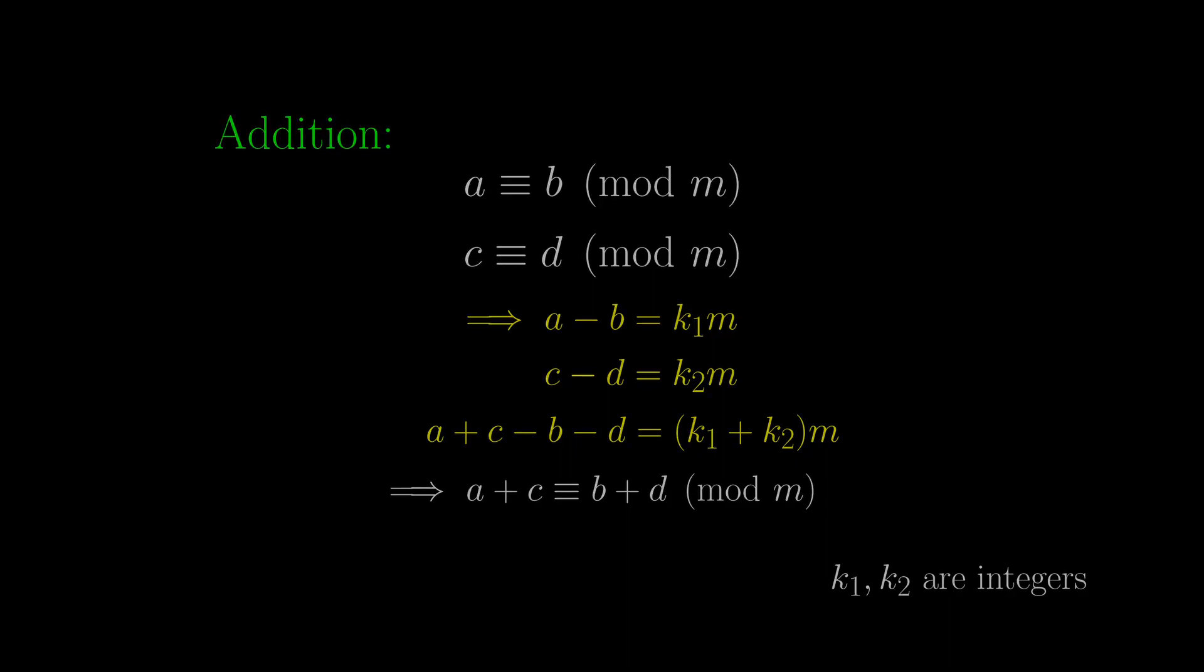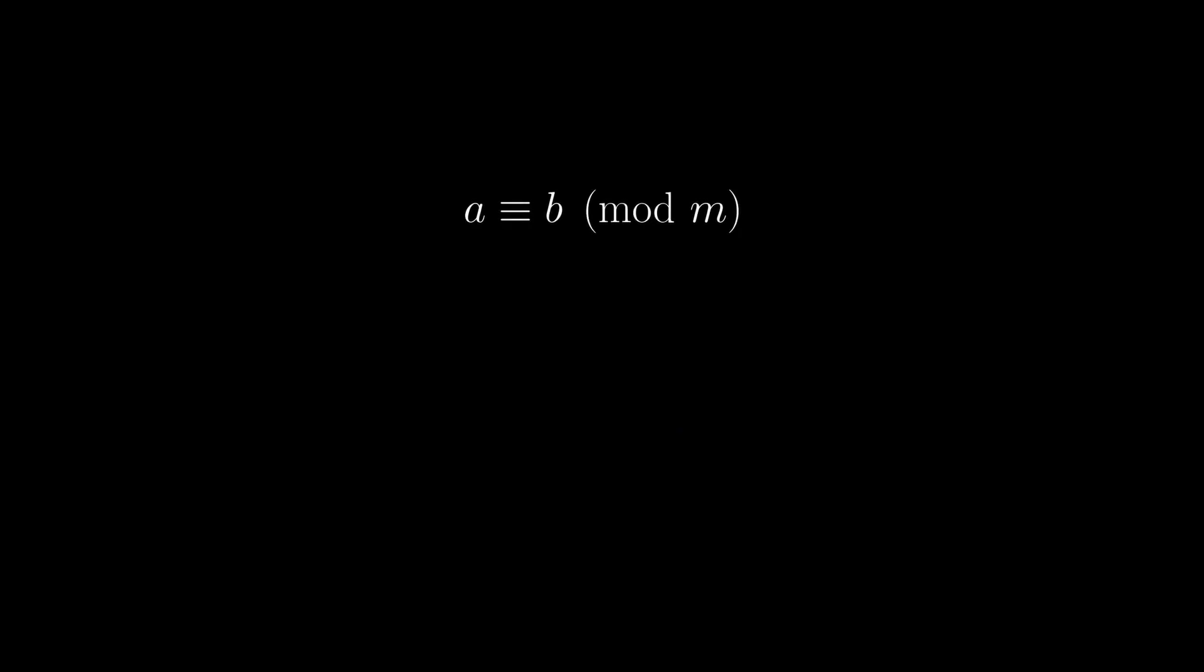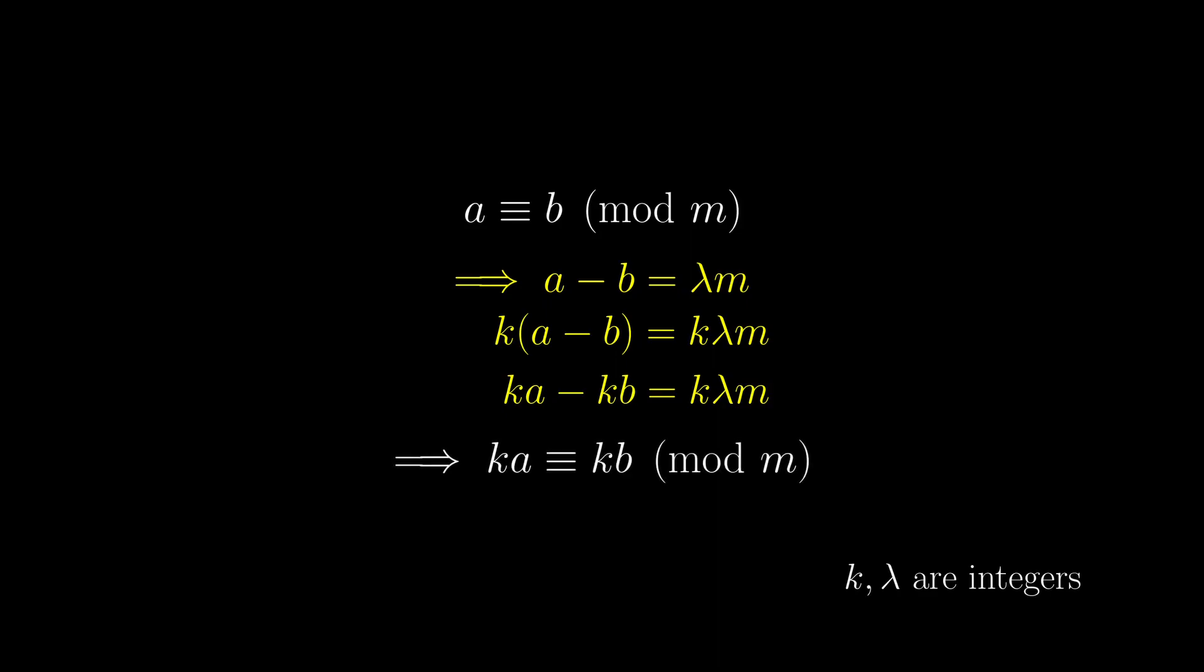If we have a congruent to b modulo m, then the difference between a and b is divisible by m. And hence, k times a minus b is also divisible by m. Since ka minus kb is divisible by m, ka is congruent to kb modulo m. So we can do multiplication by a constant on this notation.